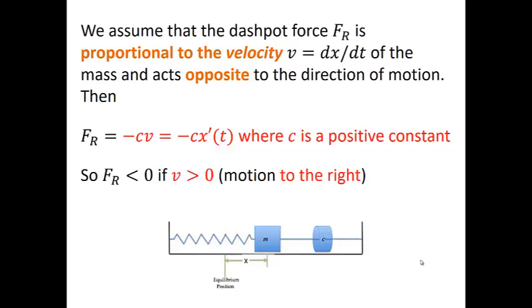This force will be negative if V is positive, meaning that our mass is moving to the right. And this force of the dashpot will be positive if V is negative, meaning if our mass is moving to the left.